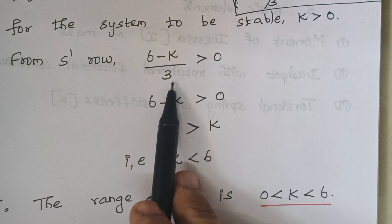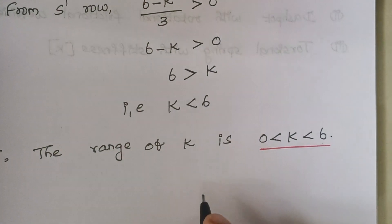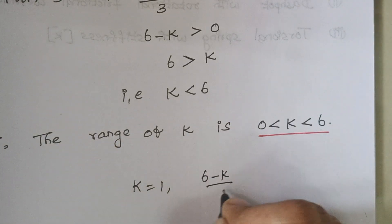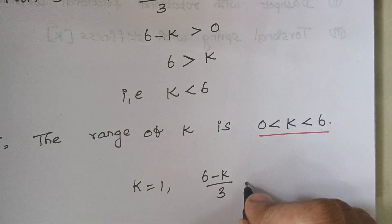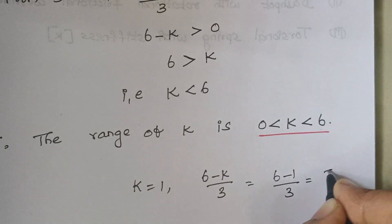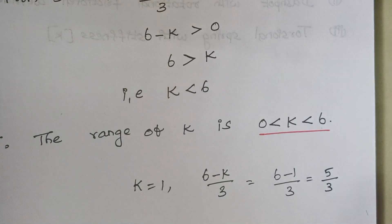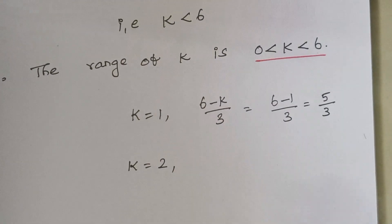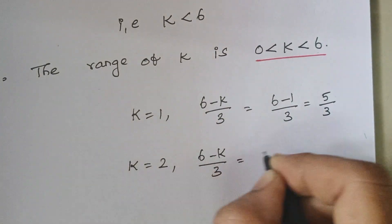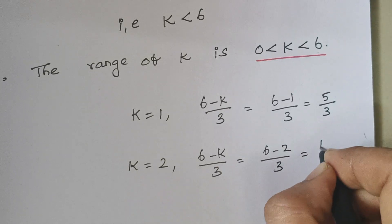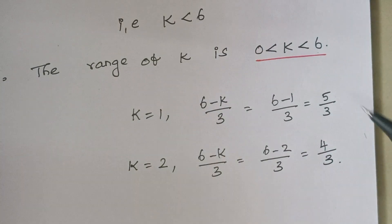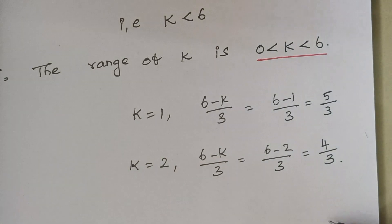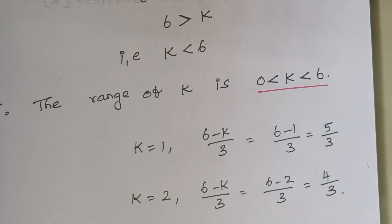For example, for the s¹ expression (6 − K)/3: when K = 1, we get (6−1)/3 = 5/3, a positive value. When K = 2, we get (6−2)/3 = 4/3, also positive. Likewise, when K = 5 we still get a positive value. This confirms the range 0 < K < 6, and the problem is complete.